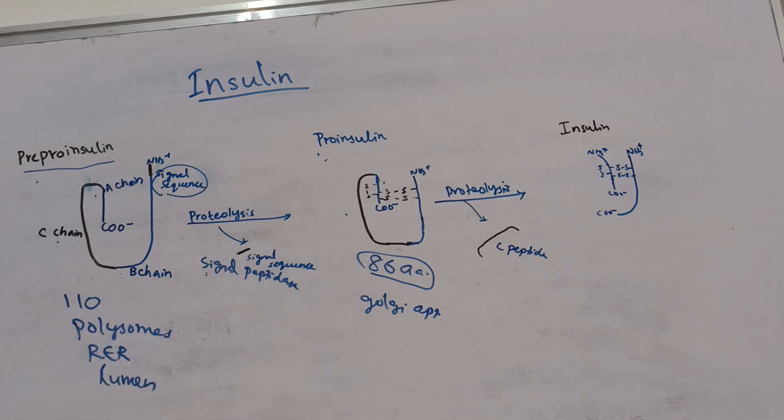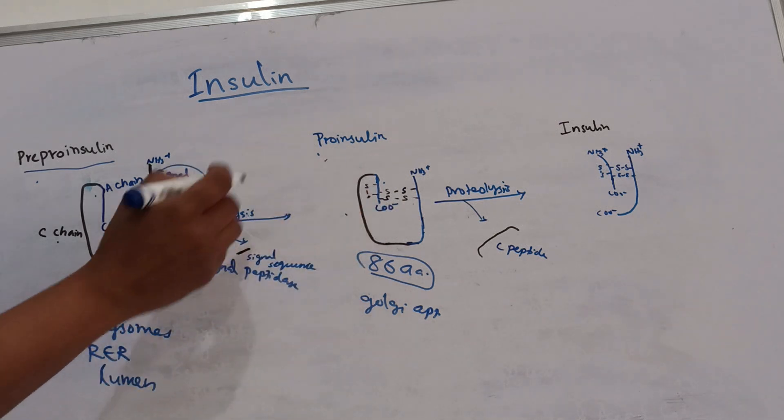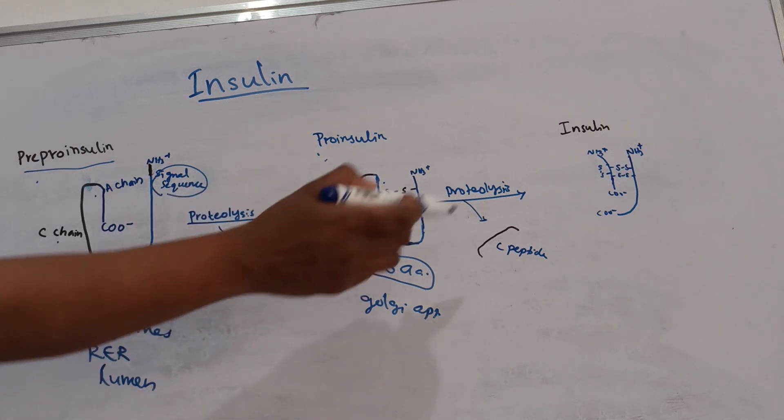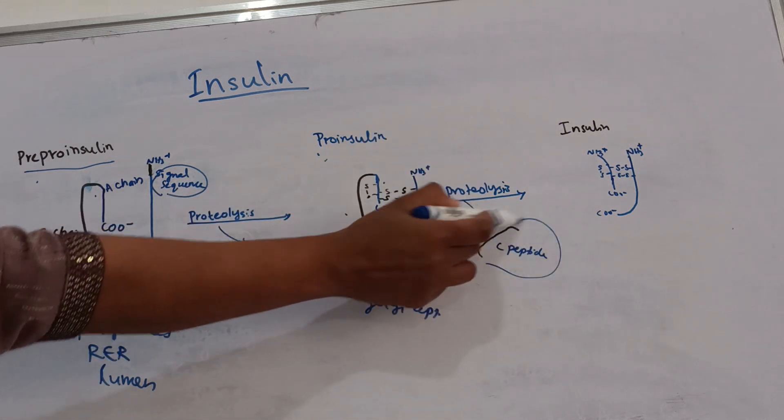Here, several endopeptidase enzymes hydrolyze peptide chains at two sides of this proinsulin and form insulin and this C peptide.